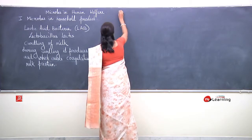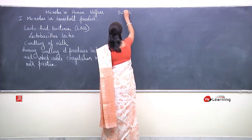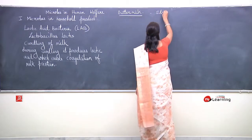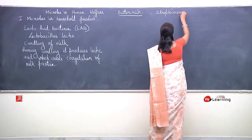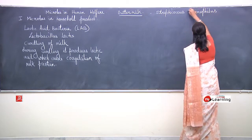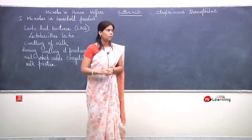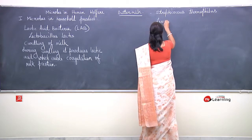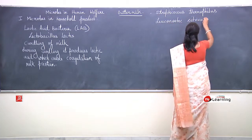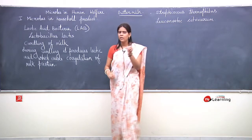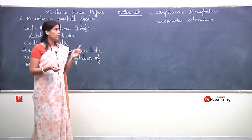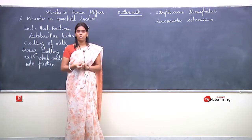Milk se ek aur product obtain kiya jata hai — butter milk. Butter milk production is mainly carried out by Streptococcus thermophilus and Leuconostoc citrivorum. Butter milk kya hai? Milk se cream nikalne ke baad, butter nikalne ke baad jo remain hai, that is known as butter milk. It is commonly produced by Streptococcus thermophilus and Leuconostoc citrivorum.